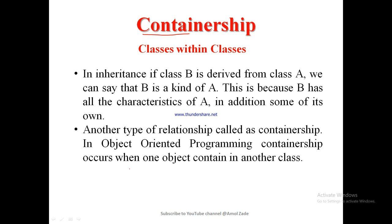In containership, we place an object of one class into another class. In this way, the properties, methods, or data members are acquired from one class to another. This kind of relation is called containership, or nesting of classes. A class that contains objects of another class as its members is called a container class.